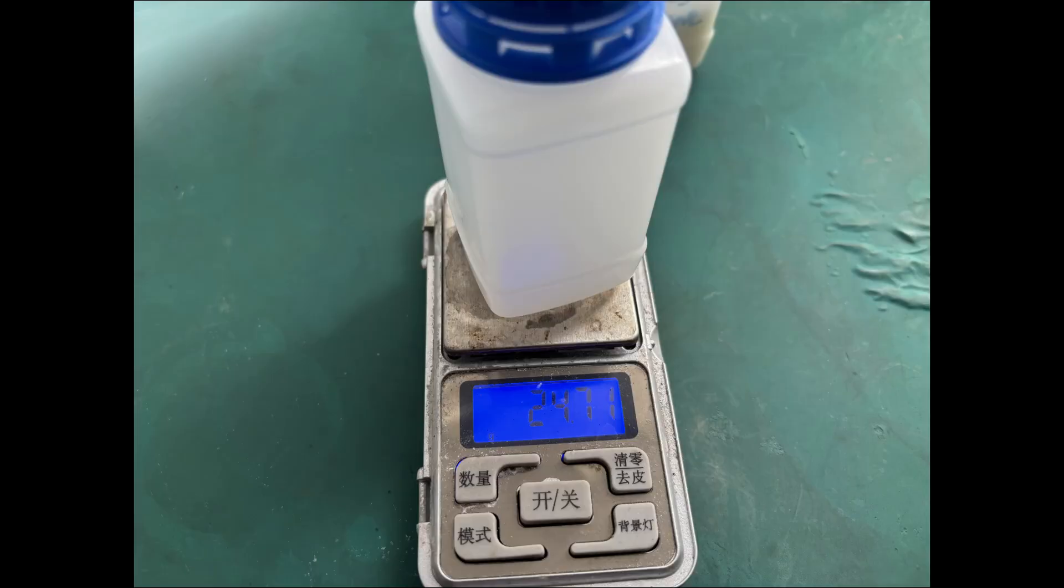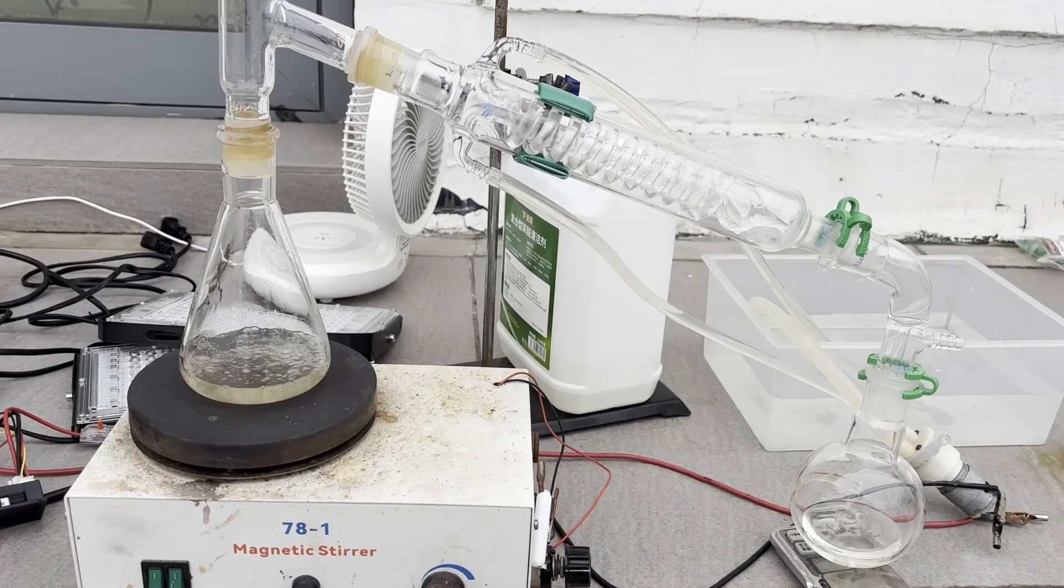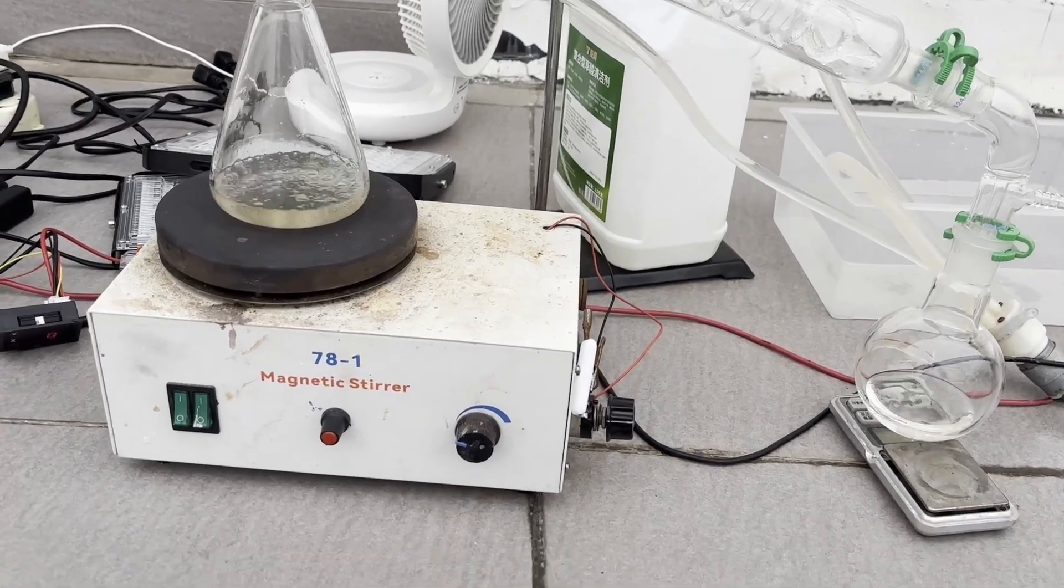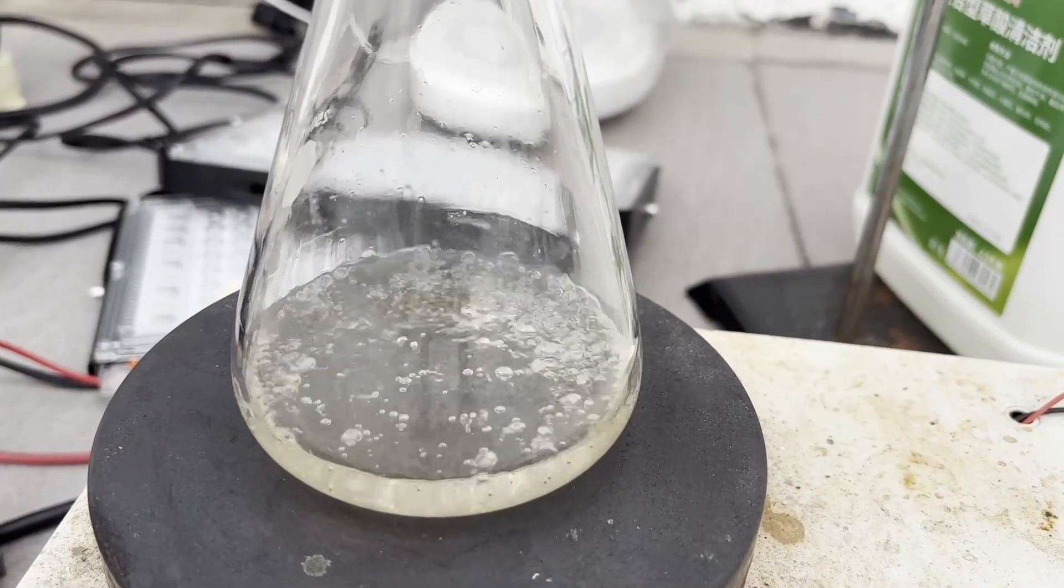The final yield of triphosgene was 52.07 grams, or 87.7%. The slightly low yield probably results from residual triphosgene sticking in the glassware, but honestly, I'm pretty happy with this amount. I'll continue to work on this process to optimize it further. See you soon!